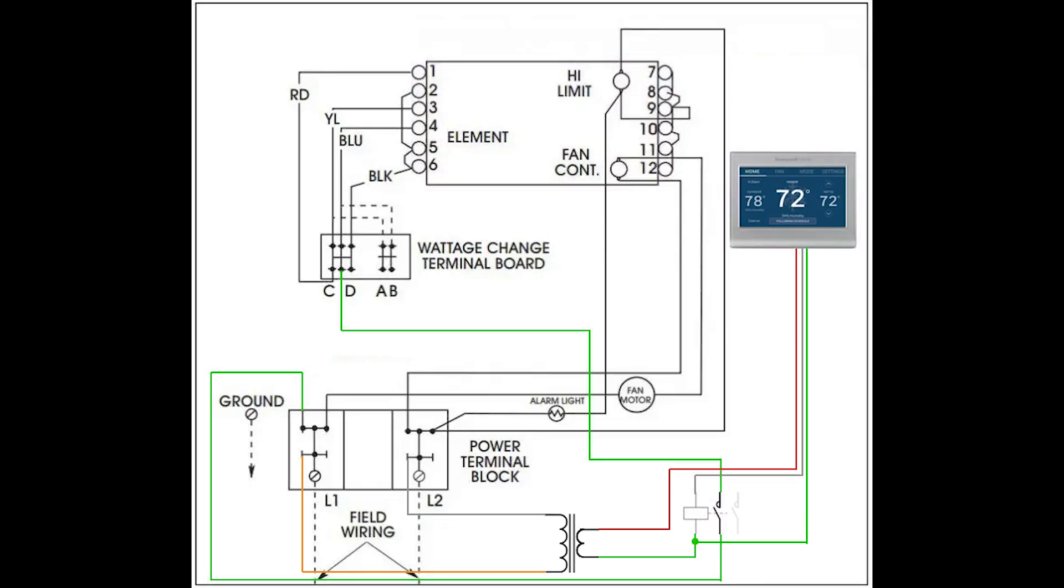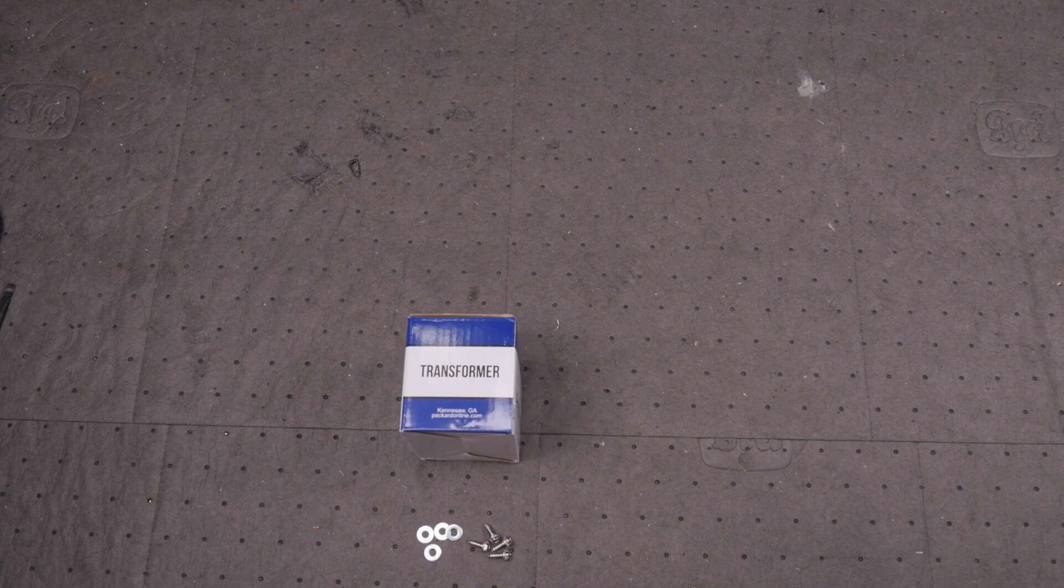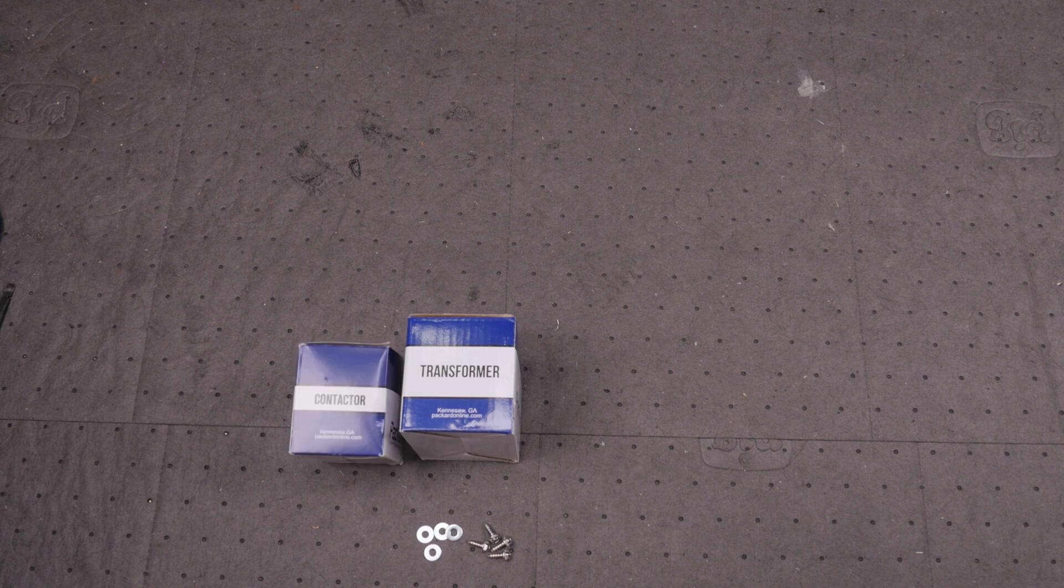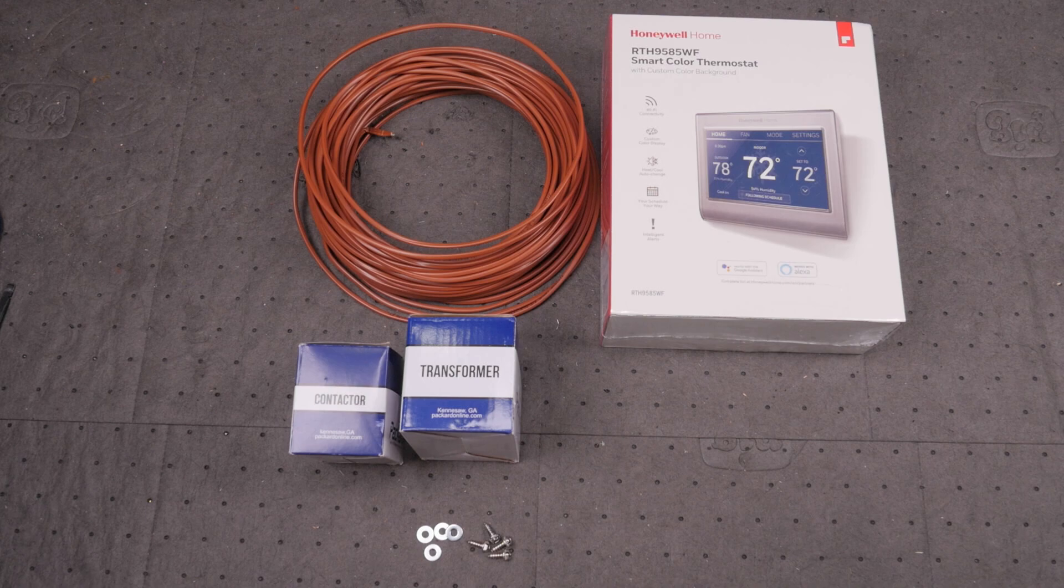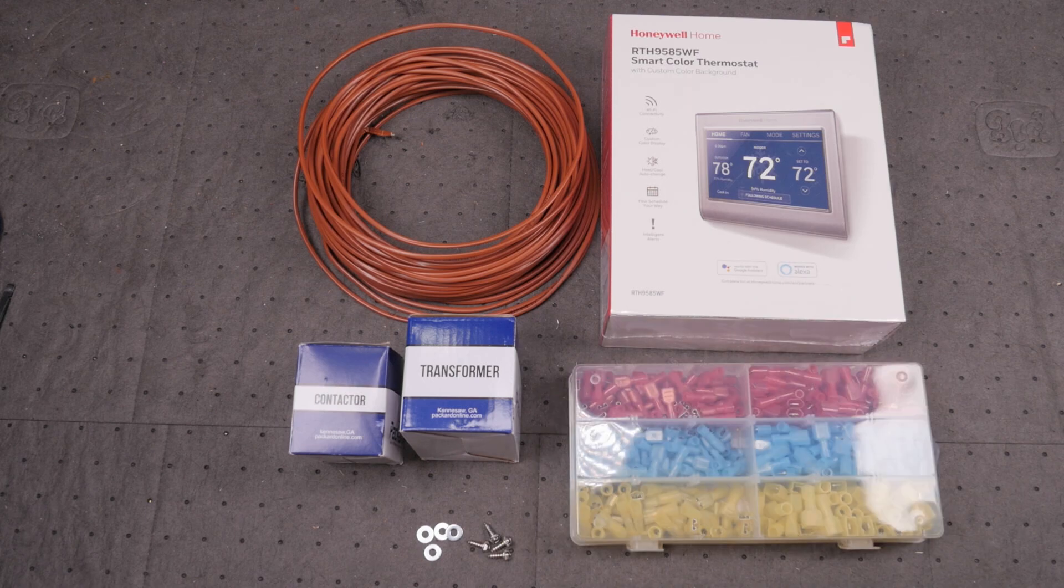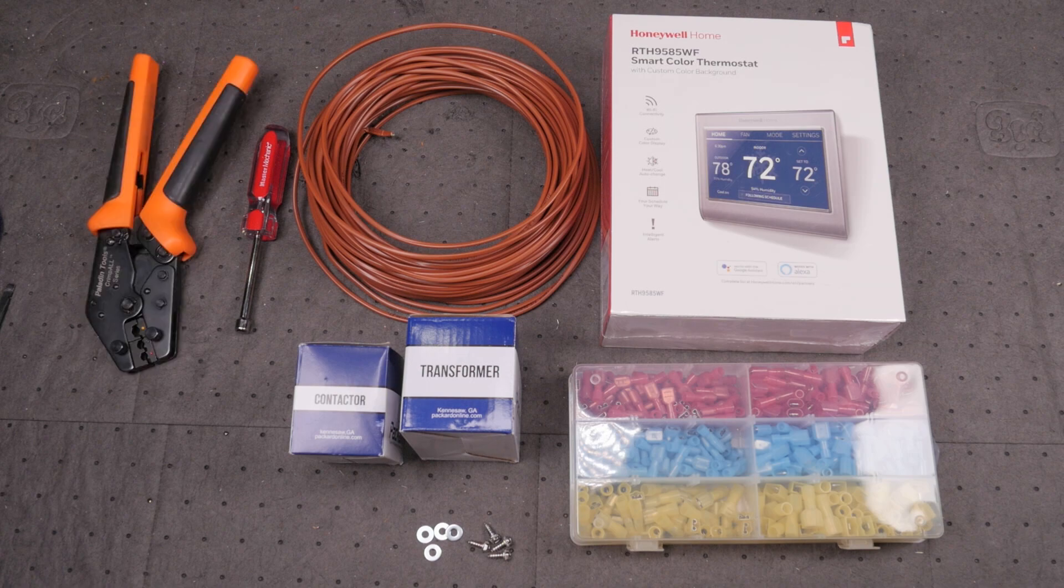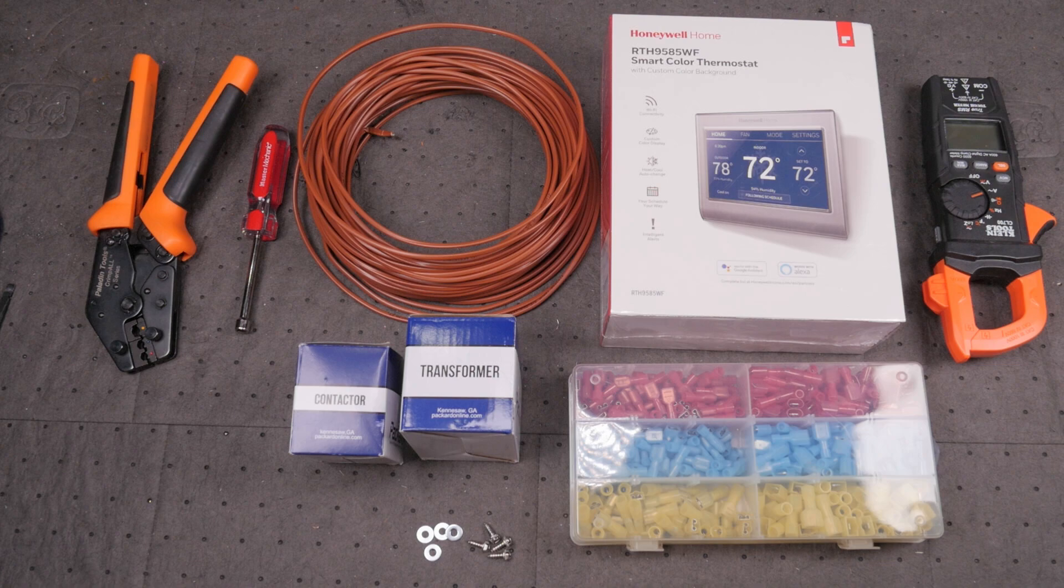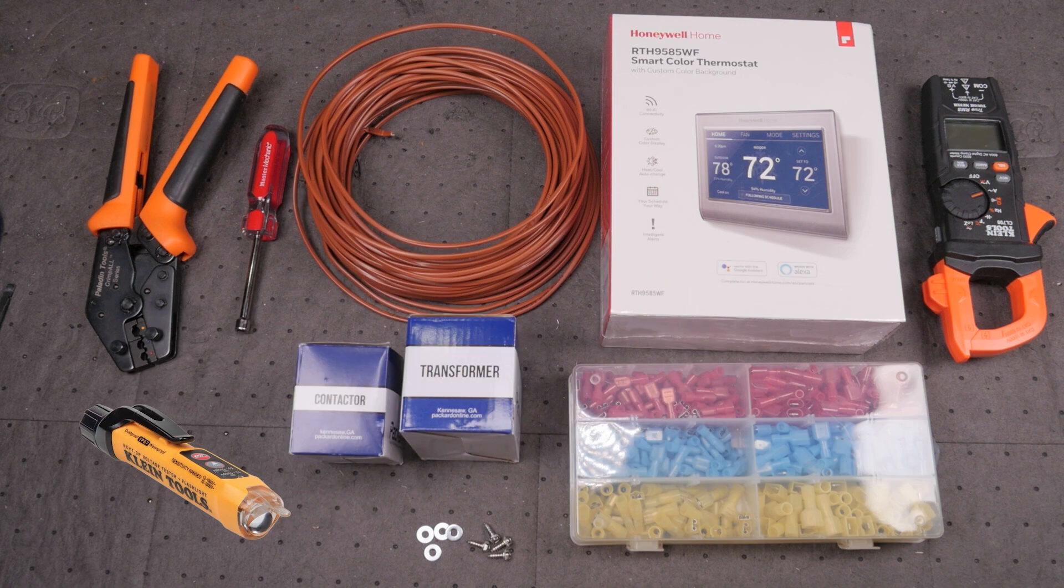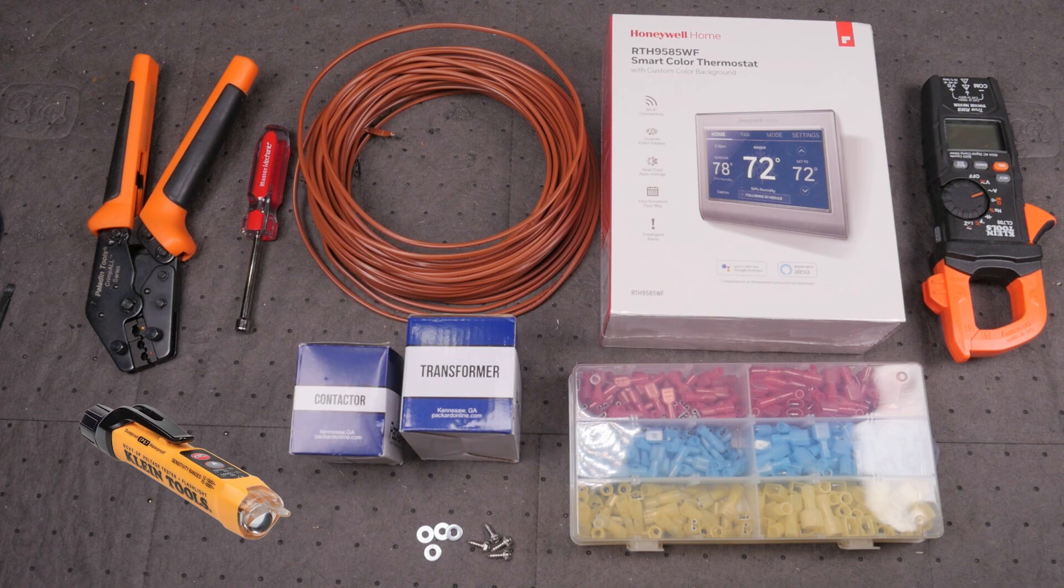Before we get to it, here's what you'll need for this project. Some sheet metal screws and washers. A 240 volt to 24 volt transformer. A contactor that can handle 20 amps. A Wi-Fi enabled thermostat. A length of at least 3 conductor thermostat cable. Appropriately sized crimp spade connectors. A nut driver or screwdriver. A crimp tool. Not completely necessary, but a multimeter and or ammeter. It's also a good idea to have a non-contact voltage tester for safety.